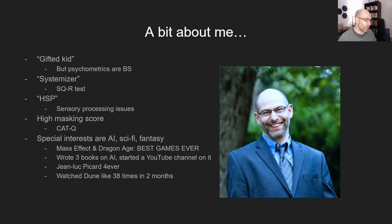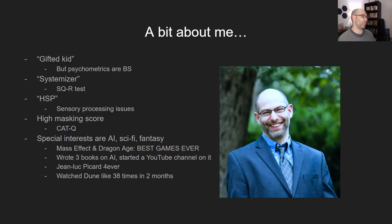A little bit about me before we get started — here are my credentials. I was a gifted kid. I'm a systemizer, which I figured out by taking the SQ-R test. I'm HSP — highly sensitive — and I have a very high masking score from the CATQ test. My special interests are AI, sci-fi, and fantasy. Mass Effect and Dragon Age are the best games ever. I've written three books on artificial intelligence and started a successful YouTube channel about it. Jean-Luc Picard is the best, and I watched the recent Dune like 38 times in two months. That's my autistic creds.